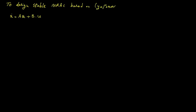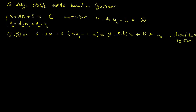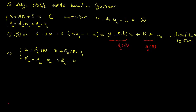We have a system defined in state space and a reference model. Similar to state feedback control, we define a controller adding up two parts: m times uc, which is the setpoint, and L times x, which refers to the state variable vector of the system. Now it is time to include the controller formula in the original system model. Here we have a closed-loop system that should follow the reference model, and if everything works perfectly they should be the same.